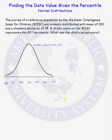In this problem we will find the data value that corresponds to a given percentile when the random variable is normally distributed. The scores of a reference population on the Wechsler Intelligence Scale for Children are normally distributed with a mean of 100 and a standard deviation of 15. A child's score on the WISC represents the 82nd percentile. What was the child's actual score?